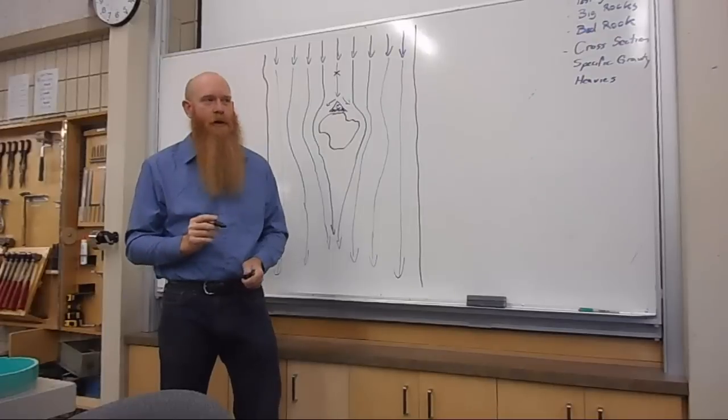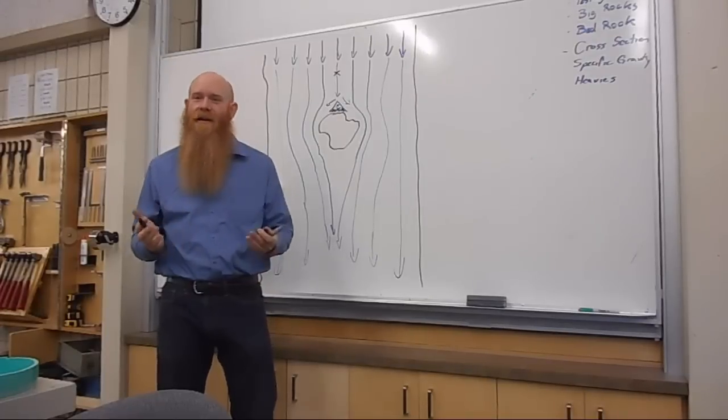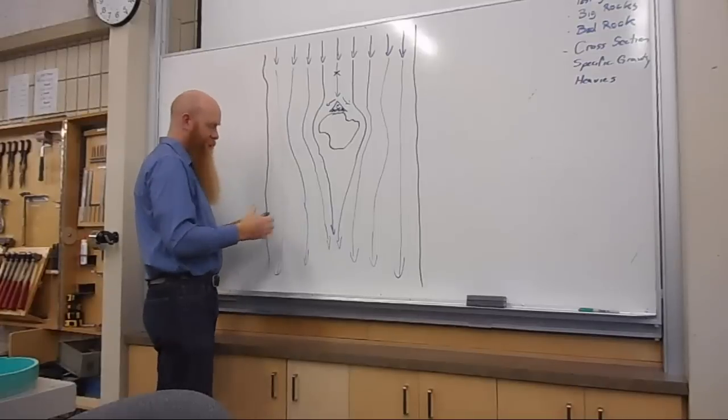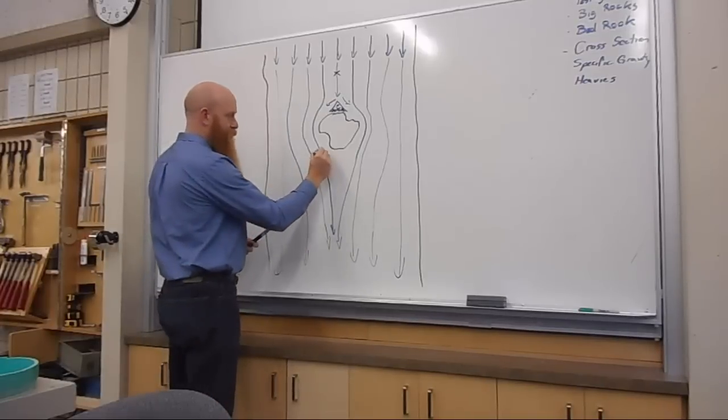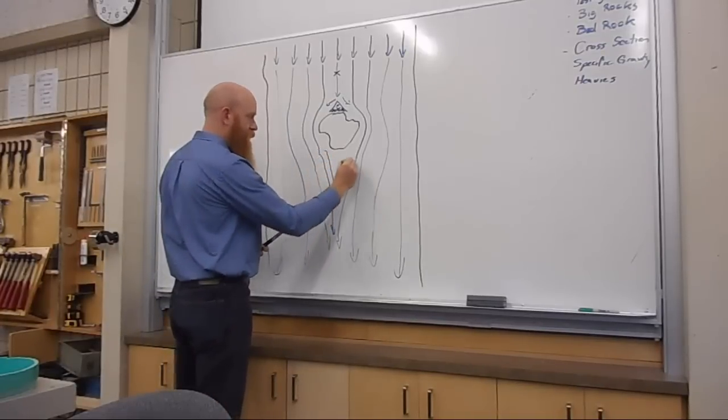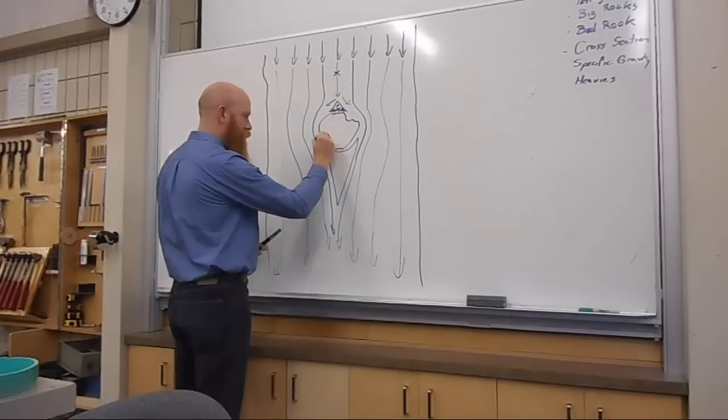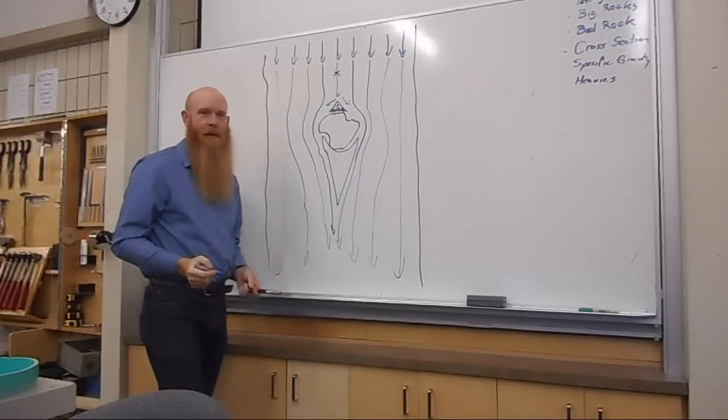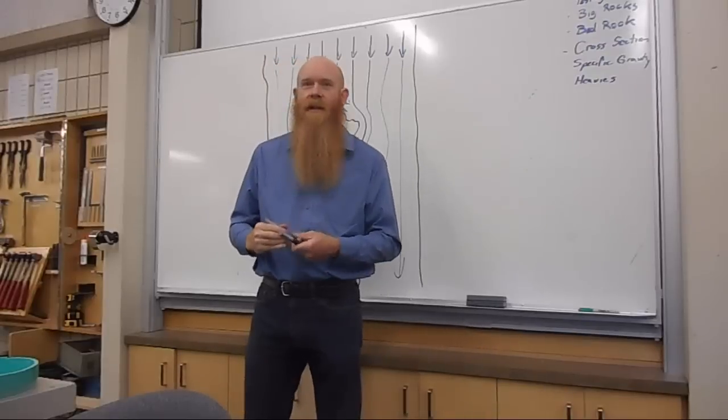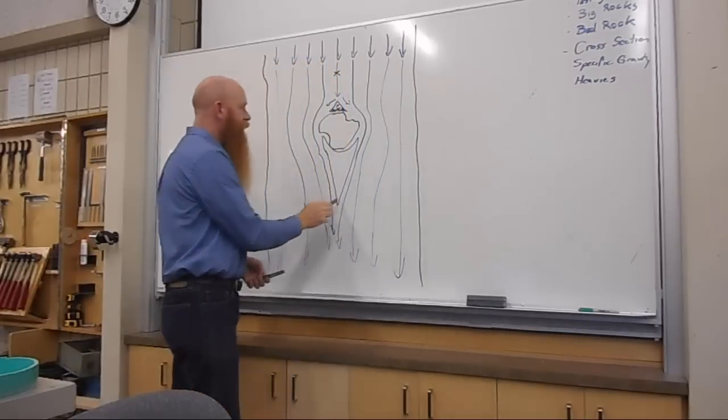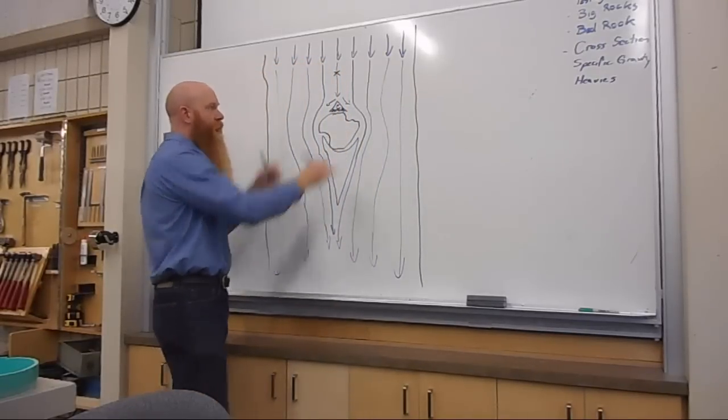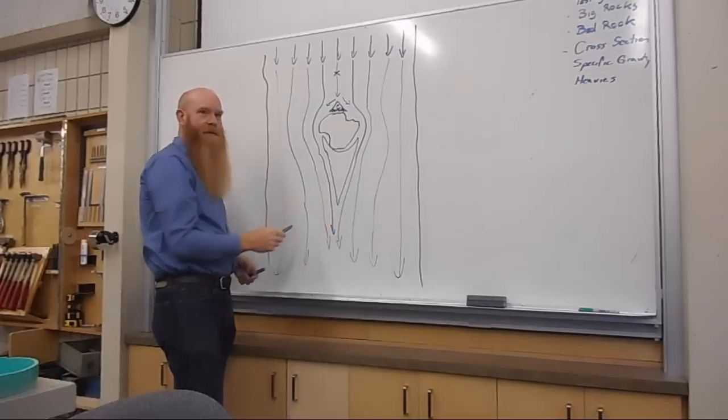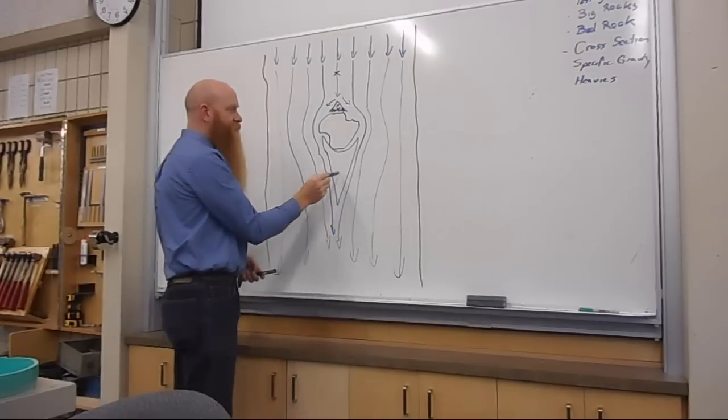The other low pressure zone, the other place where water is not flowing very fast, is in a big triangle right behind the boulder. Right behind the boulder, there's a big low pressure zone where the water flow is not pushing hard, and it's very dead.